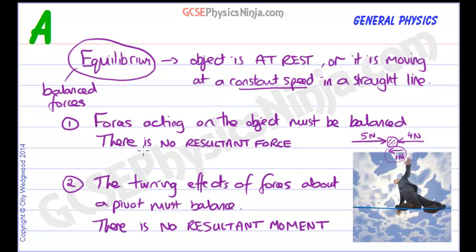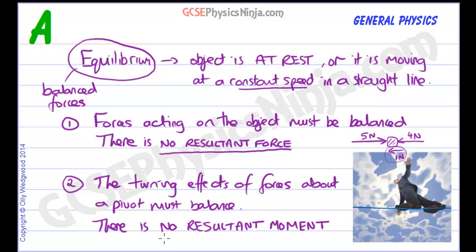So the key takeaways are: for a body to be in equilibrium, which means it's at rest or moving at constant speed, the forces must be balanced — there is no resultant force. And secondly, there is no resultant moment; there is no overall turning effect of forces about a pivot. They must balance and cancel each other out.